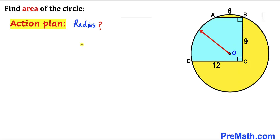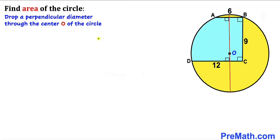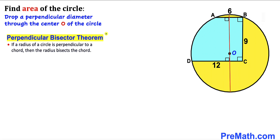Let's get started. Our action plan: before we do anything else, we are going to calculate the radius of this circle. Let me label this radius as lowercase r. I have drawn a perpendicular that passes through center O. Recalling the perpendicular bisector theorem: if a radius of a circle is perpendicular to a chord, then the radius bisects the chord. Here AB is the chord, so line segment AE equals EB. This length of 6 is divided into two parts, so each side length is 3 units.